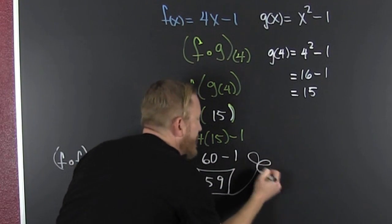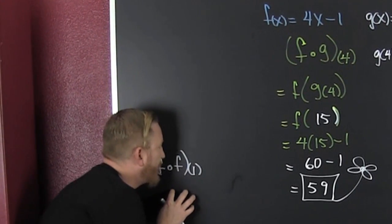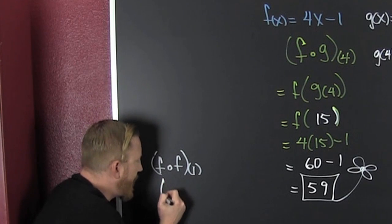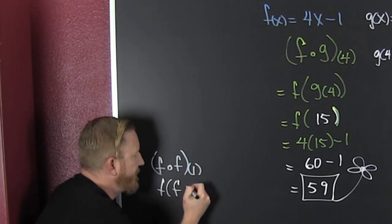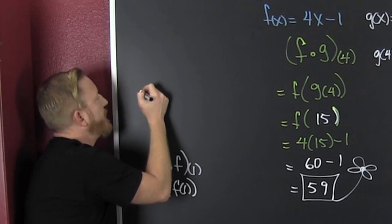But wait, there's more. One more. Come on in here. I'm looking for f of f of 1. So what is this? This is f of f of 1. So, what do I need to find? I need to find f of 1.